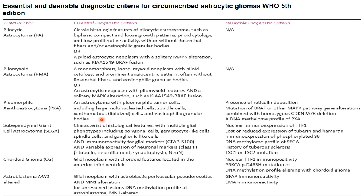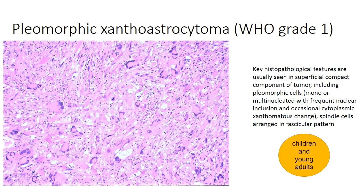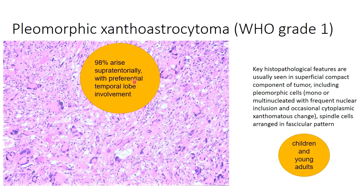Pleomorphic xanthoastrocytoma shows characteristic pleomorphic morphology of tumor cells with multinucleated giant cells, spindle cells, and lipidized cells. Desirable criteria include a characteristic BRAF or other MAPK gene pathway mutation with combined homozygous CDKN2A/2B deletion. A DNA methylome profile of pleomorphic xanthoastrocytoma is also recommended by CNS-WHO 5. This tumor occurs in children and young adults, with the site of predilection mainly in the supratentorial region, preferentially involving the temporal lobe.